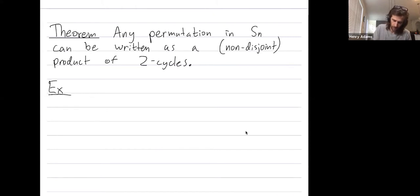Let's do an example where we consider this permutation: 1, 2, 4, 3, 5.